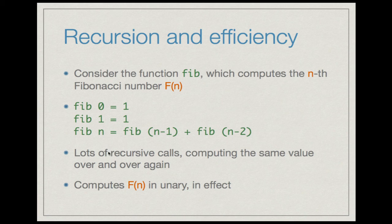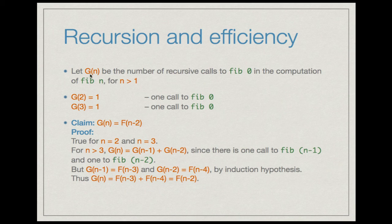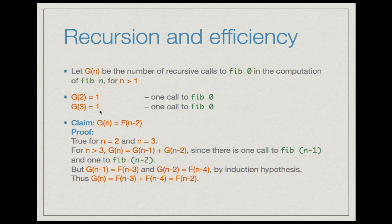In fact, one can see that this program computes f(n) in unary in effect. To make this formal, let g(n) be the number of recursive calls to fib(0) in the computation of fib(n) for n > 1. It's easy to see that g(2) = 1 because fib(2) = fib(1) + fib(0). So g(3) = 1 because fib(3) = fib(2) + fib(1). fib(2) makes a recursive call to fib(1) and fib(0), and fib(1) is defined directly, so there is one recursive call to fib(0).